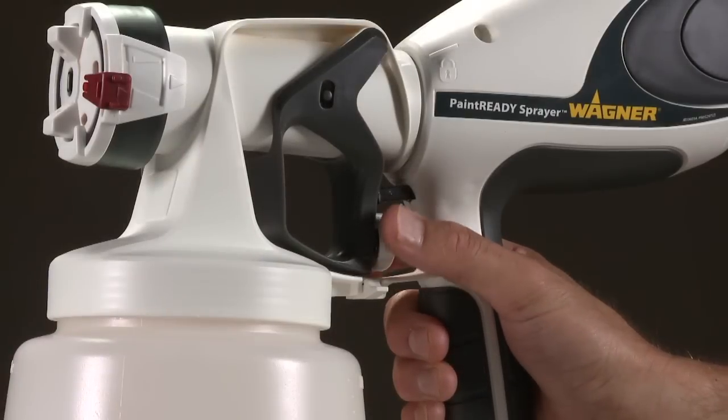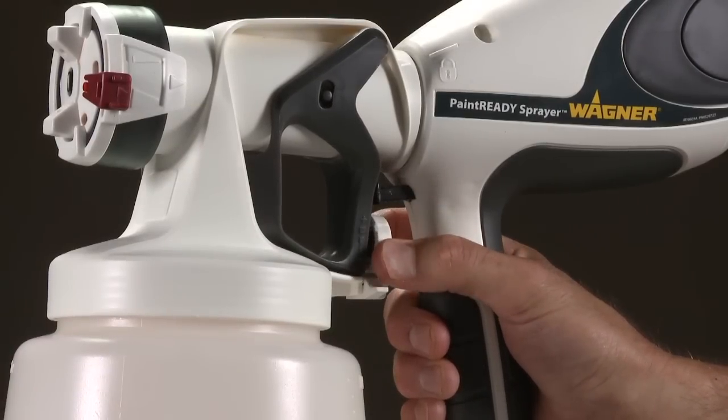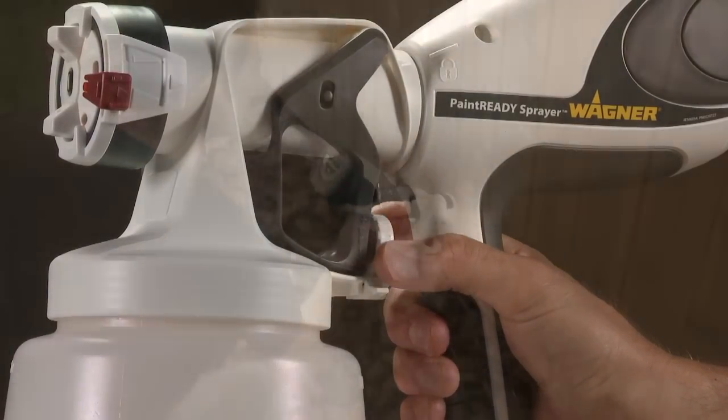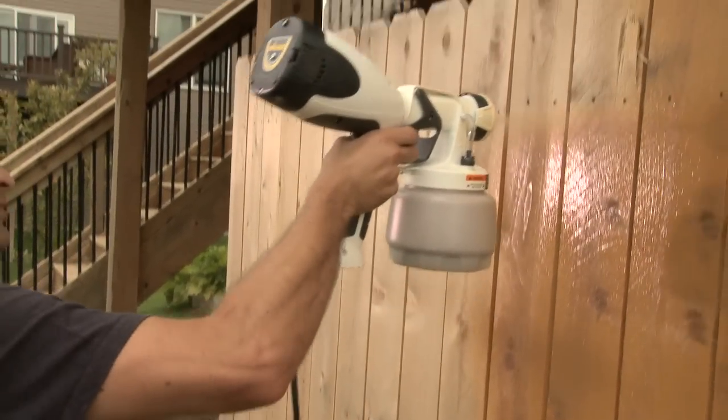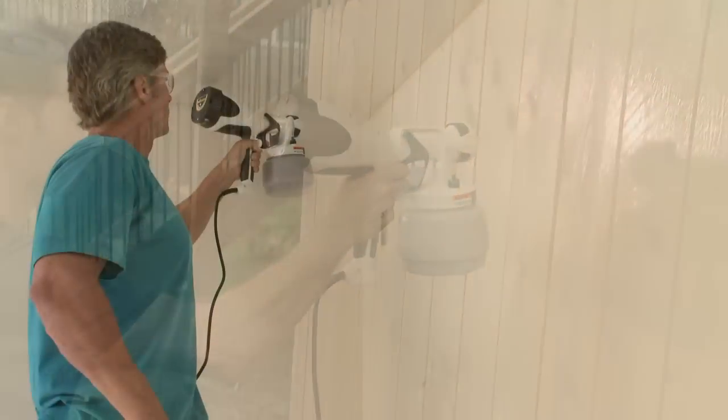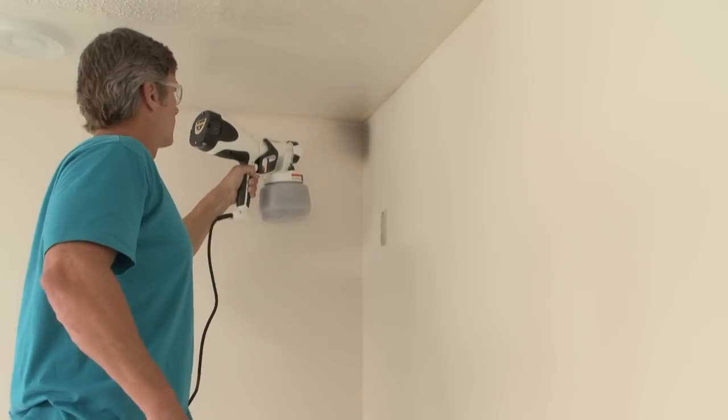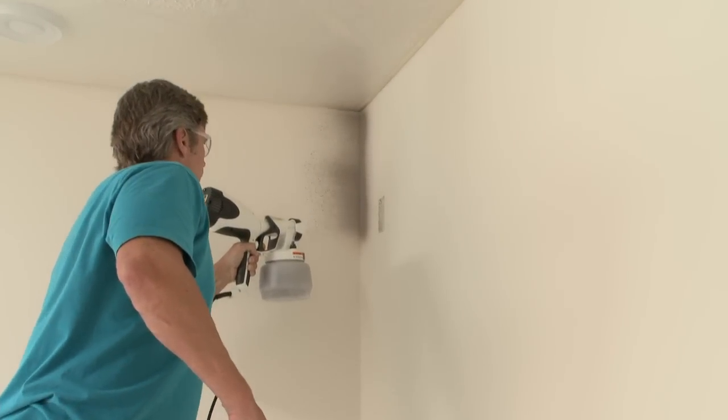For thicker materials, start with the highest flow setting and then dial down to suit your spraying needs. The higher the flow setting, the quicker you will have to work in order to avoid sags caused by too much material. Start with a clean paint surface to avoid blowing dust on your freshly sprayed surface.